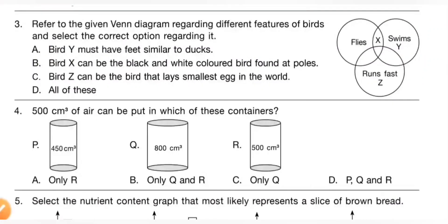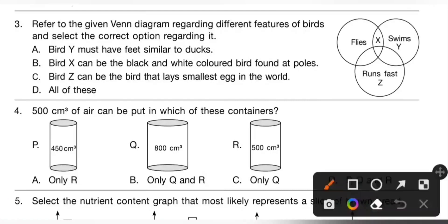Third question: refer to the given Venn diagram regarding different features of birds and select the correct option. Please pause the video and try to find X, Y, and Z. Z is the ostrich, a running bird. Y is a swimming bird, so Y may be penguin. X is both a flying and swimming bird, so it may be a duck. Option A — bird Y must have feet similar to ducks — is the correct option.